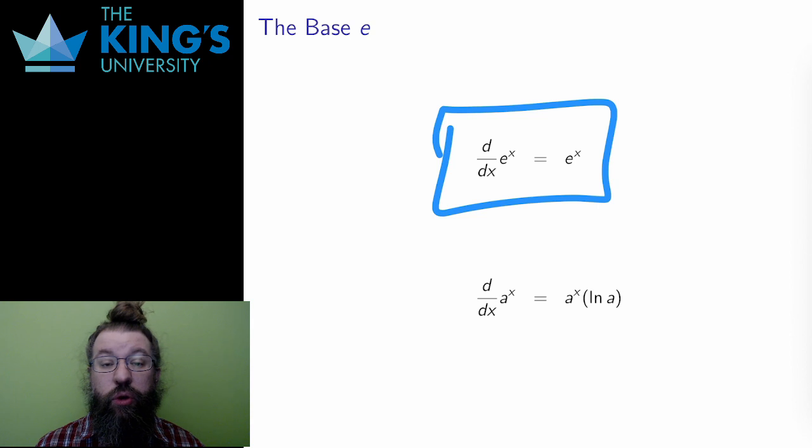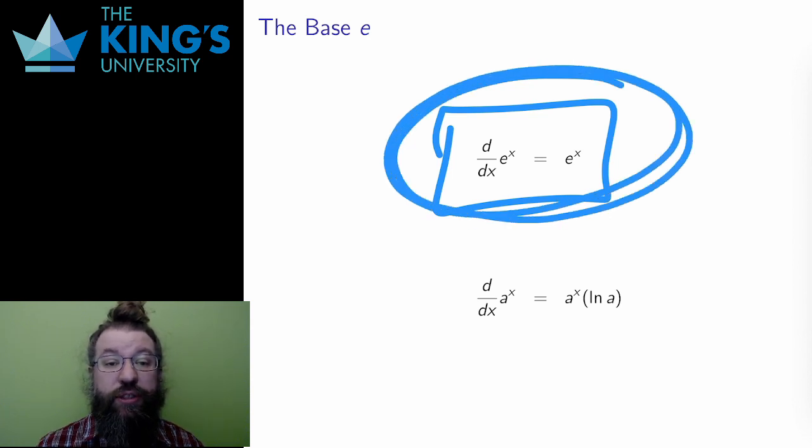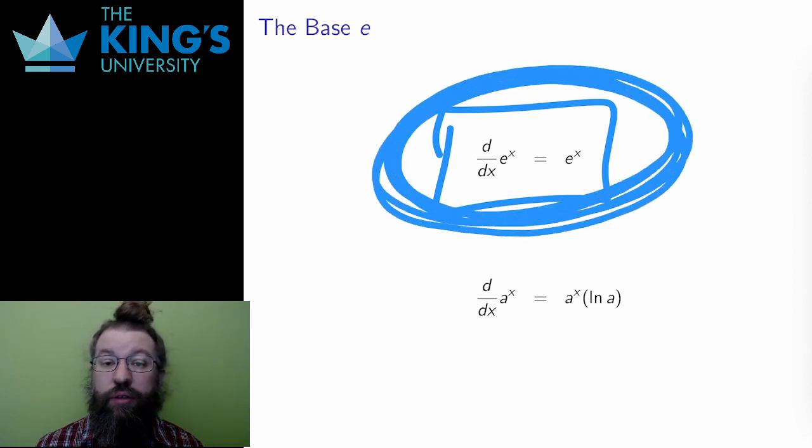I said earlier in the course that I would justify the base e and its importance. This is the justification. Having a function which is its own derivative is extremely convenient. Using e to the x just makes sense in calculus.